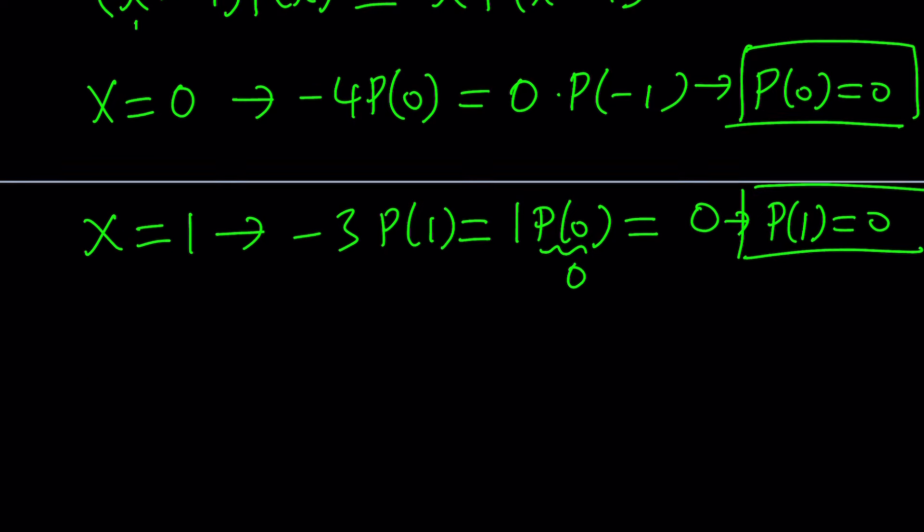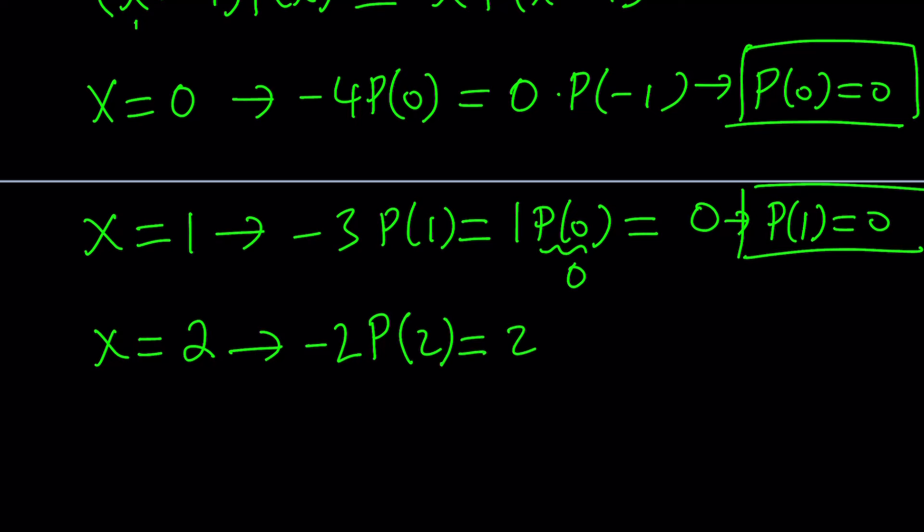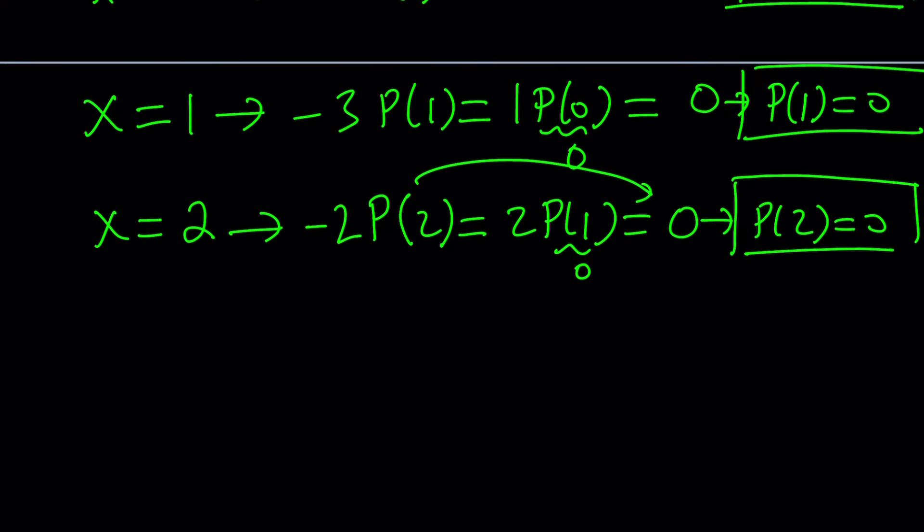We got another good result, and let's continue, hoping to get a pattern. If X is equal to 2, on both sides again, we're going to get negative 2 times P of 2 equals 2 times P of 1. Now, we know P of 1 is equal to 0, so this will be 0 again, and this means P of 2 is equal to 0.